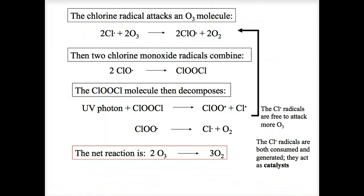Chlorine can act as a catalyst. One chlorine atom can break down over a thousand molecules. Catalysts speed up the rate of reaction by reducing the activation energy and changing the set of reactions that occur.